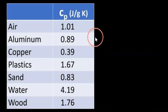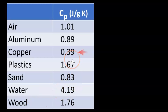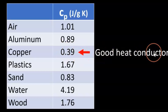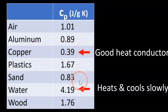You'll probably be given a table of specific heat capacities. Notice how water is very high and copper is very low. That means copper is a good conductor of heat — it doesn't take long to heat up or transfer heat throughout copper. But water is a good insulator because it heats up slowly, having a high specific heat capacity.